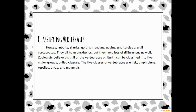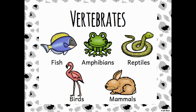The five classes of vertebrates are fish, amphibians, reptiles, birds, and mammals. Today we're going to talk specifically about the first class — fish. Here are some examples of the five classes. Say those with me so you can start to learn them: fish, amphibians, reptiles, birds, mammals.